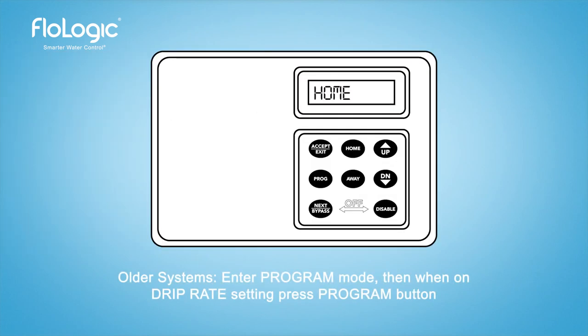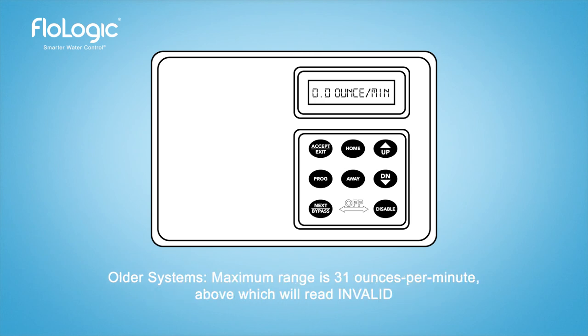To see the real-time flow rate when the system is in the home mode, press the home button to display any flow occurring from a half ounce up to 48 ounces per minute. Flow occurring above 48 ounces is indicated by the words high flow.